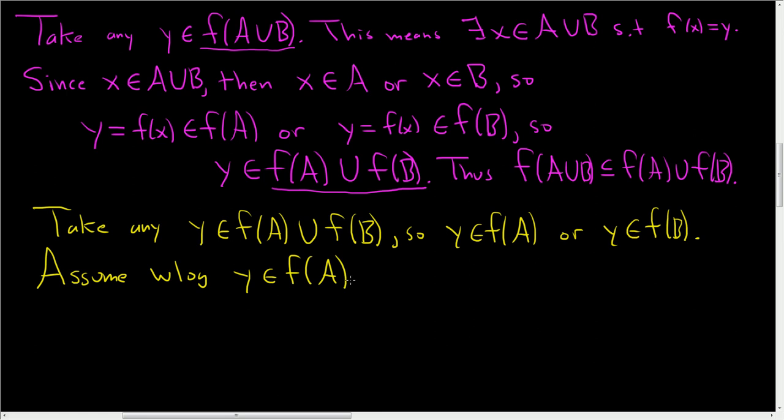If Y is in F of B, the argument is very similar. It's pretty much exactly the same. So Y is in F of A. So this means there exists an X in A, such that Y is equal to F of X.